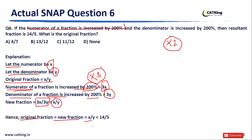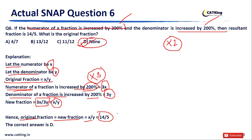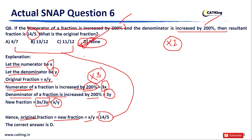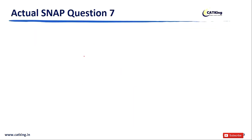The new fraction equals X/Y, which equals 14/5 — the same as the original fraction. Hence the correct answer is option D: None of these. You don't even need to solve this fully — since the numerator and denominator are increased by the same percentage, the original fraction equals the resultant fraction. The original fraction is 14/5, and none of options A, B, or C match, so D is correct.